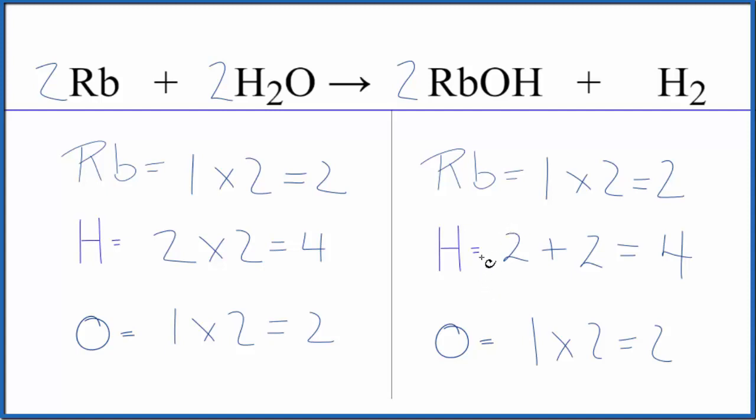This equation is balanced. The key here, we had that odd number of hydrogens. We needed to get that to an even number. And that's really what made this a much easier equation to balance.